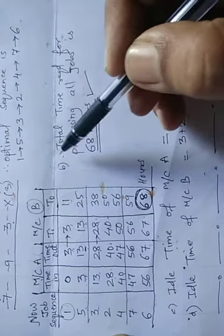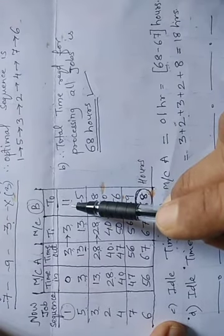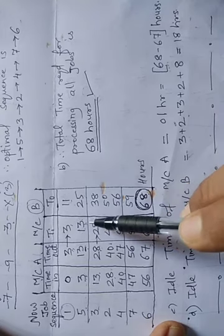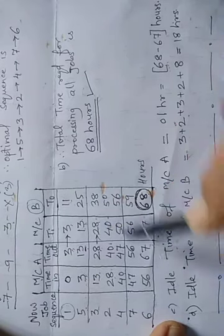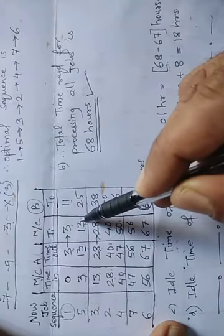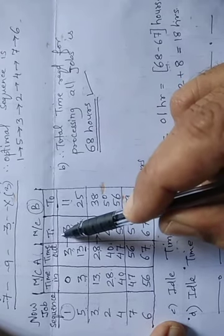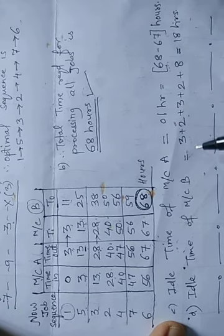For Machine B's idle time: Machine B was idle for the first 3 hours at the start. Then from 11 to 13 it was idle (2 hours), from 25 to 28 idle (3 hours), from 38 to 40 idle (2 hours), and further gaps adding up to 8 hours. Total idle time of Machine B = 3 + 2 + 3 + 2 + 8 = 18 hours. This completes the problem. Thank you all.